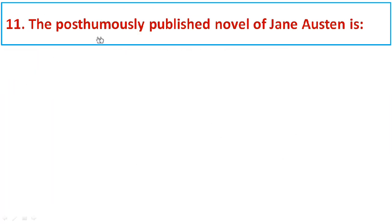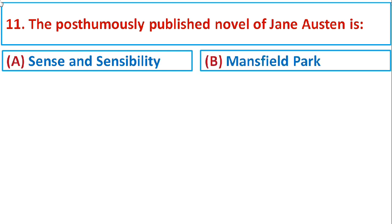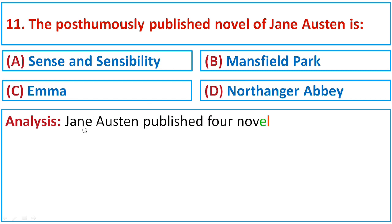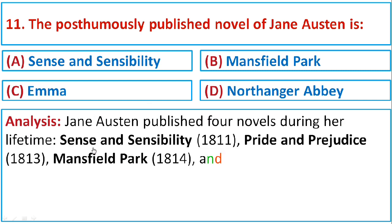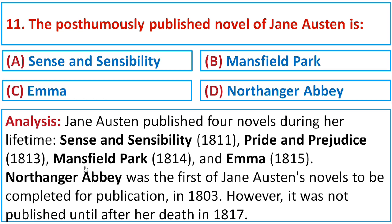Question number eleven: The posthumously published novel of Jane Austen is Option A: Sense and Sensibility, Option B: Mansfield Park, Option C: Emma, or Option D: Northanger Abbey. Jane Austen published four novels during her lifetime: Sense and Sensibility (1811), Pride and Prejudice (1813), Mansfield Park (1814), and Emma (1815). Northanger Abbey was the first of Austen's novels completed for publication in 1803, but was not published until after her death in 1817. The correct option is D: Northanger Abbey.